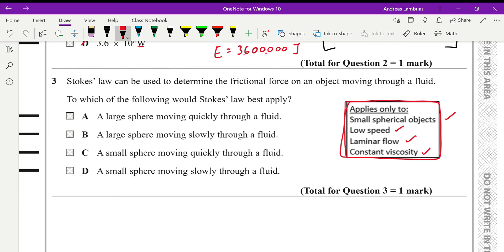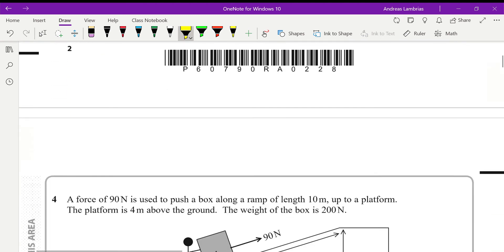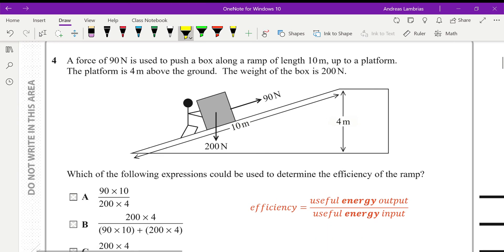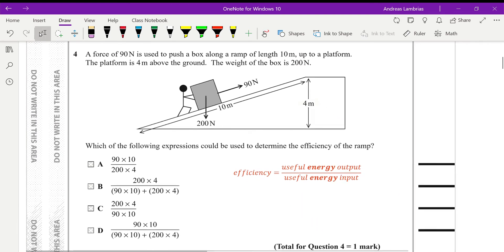So from these options, if you read the options you will see that small sphere as we said and moving slowly, so D is the right answer for question three.